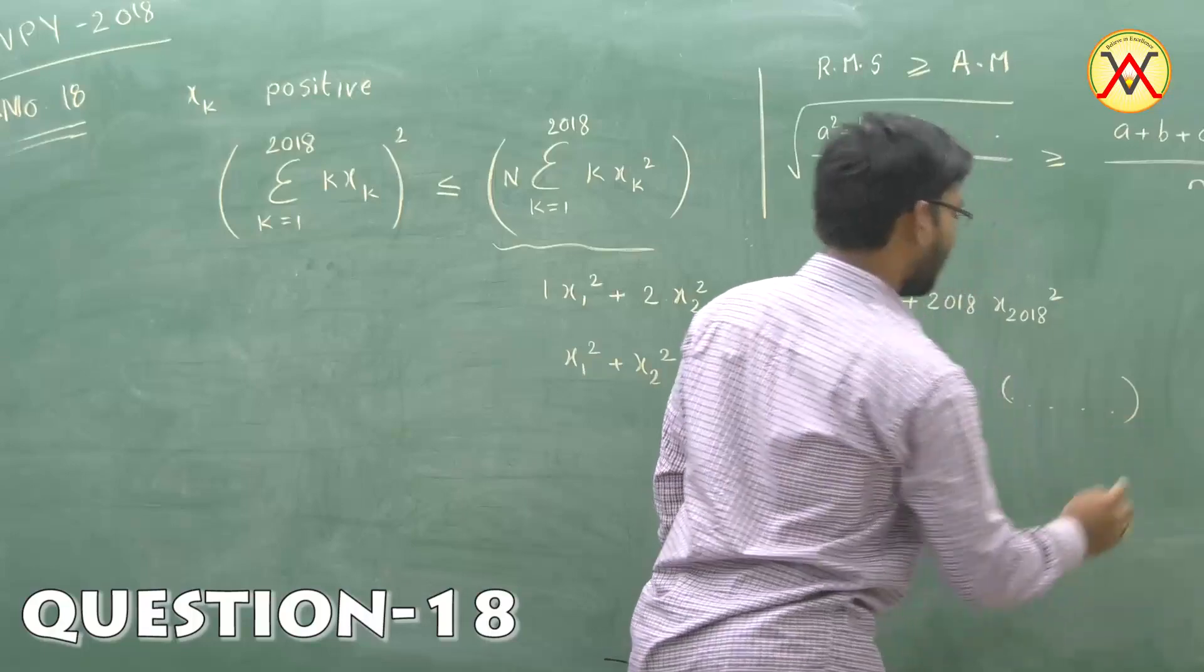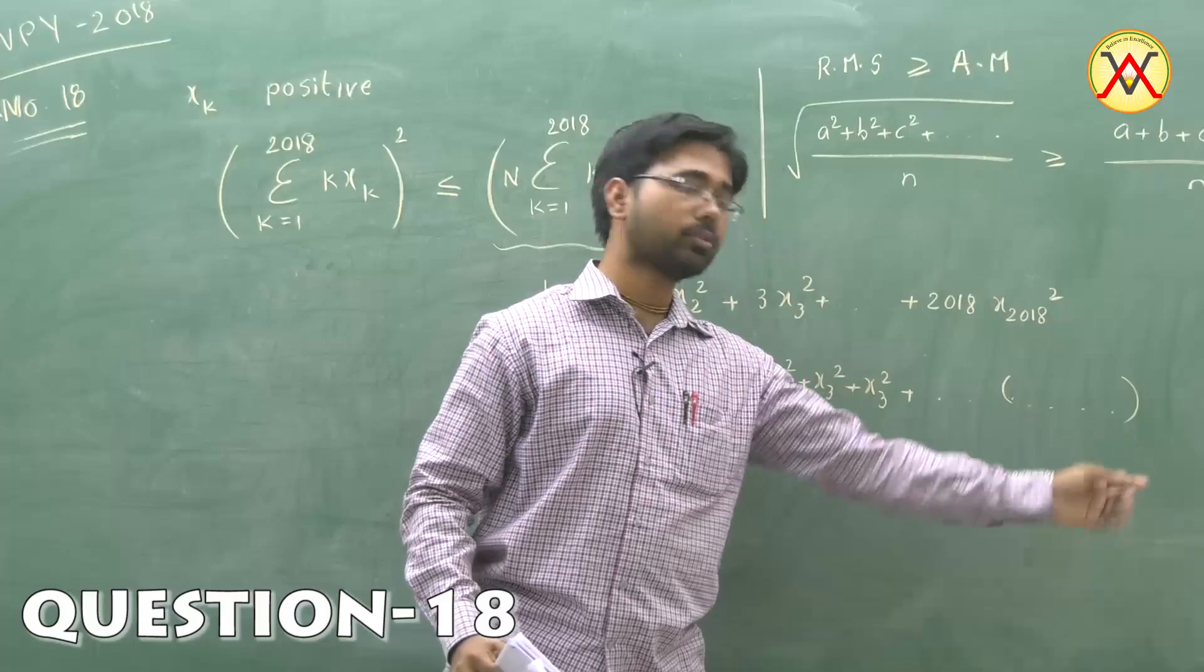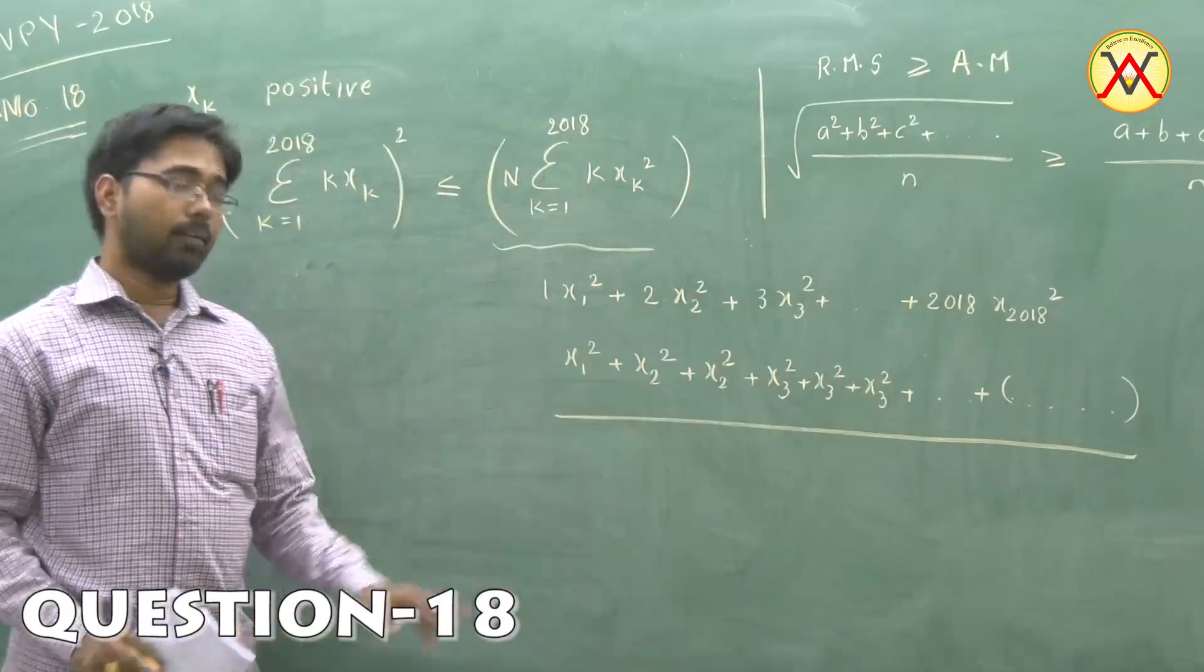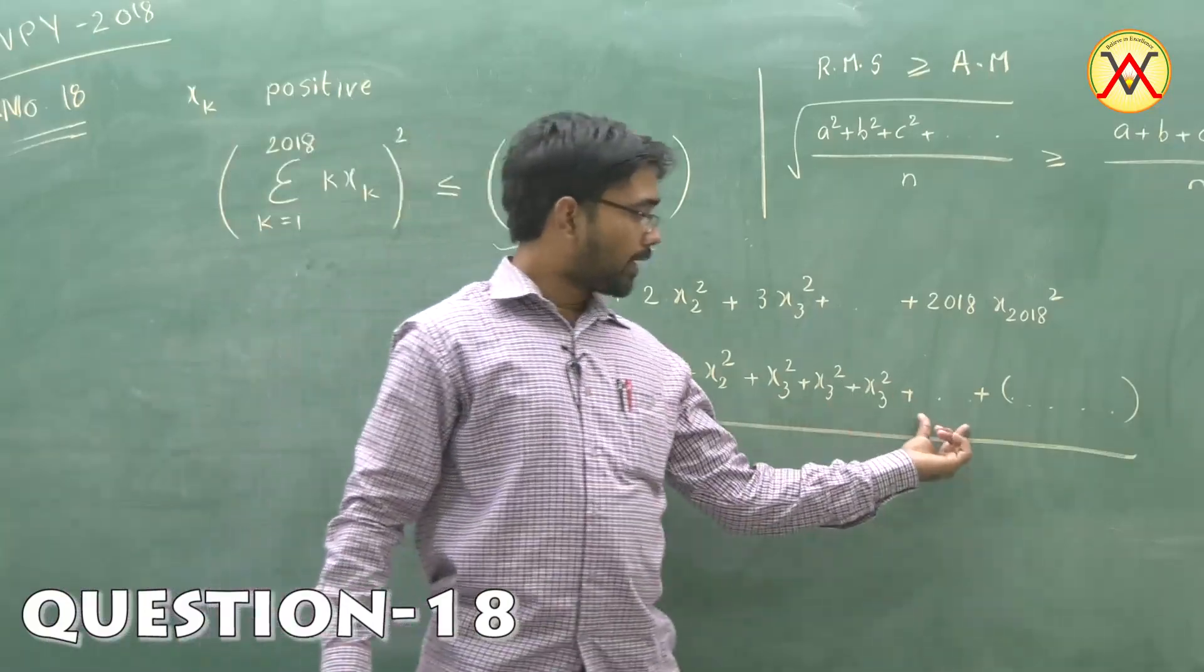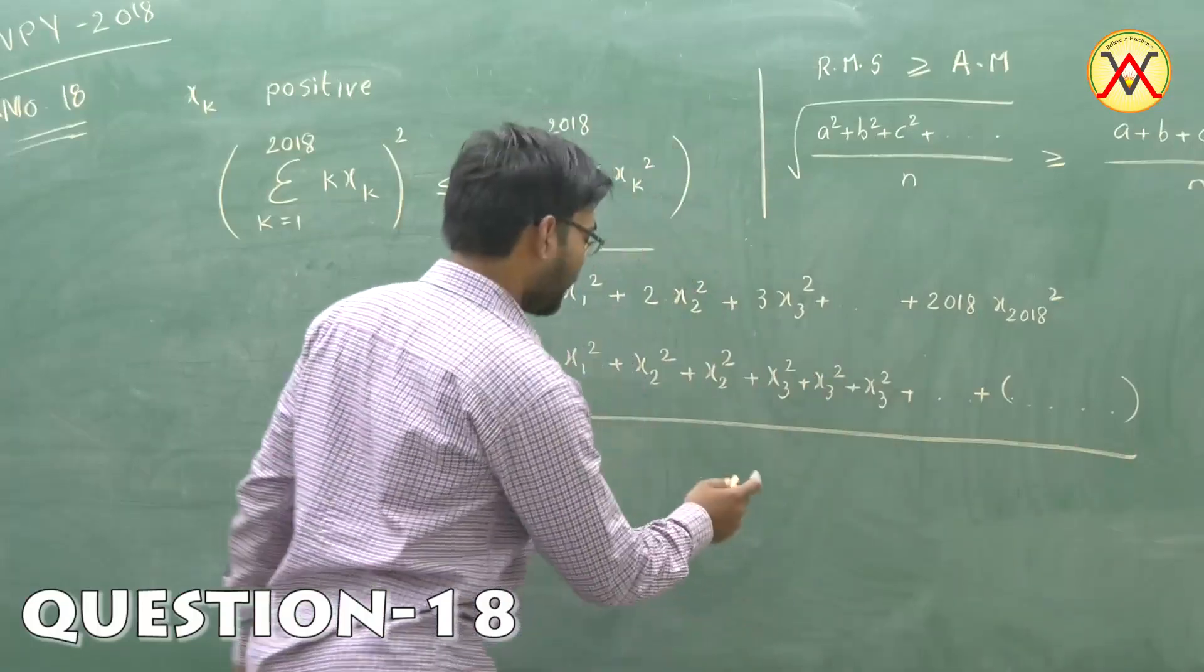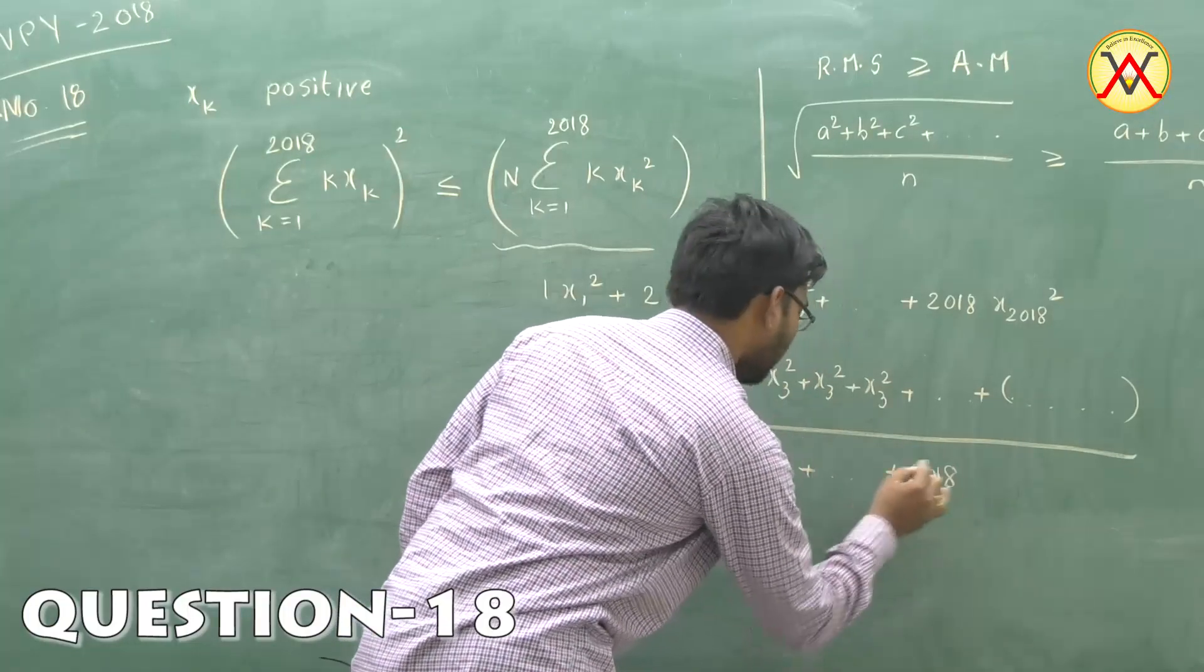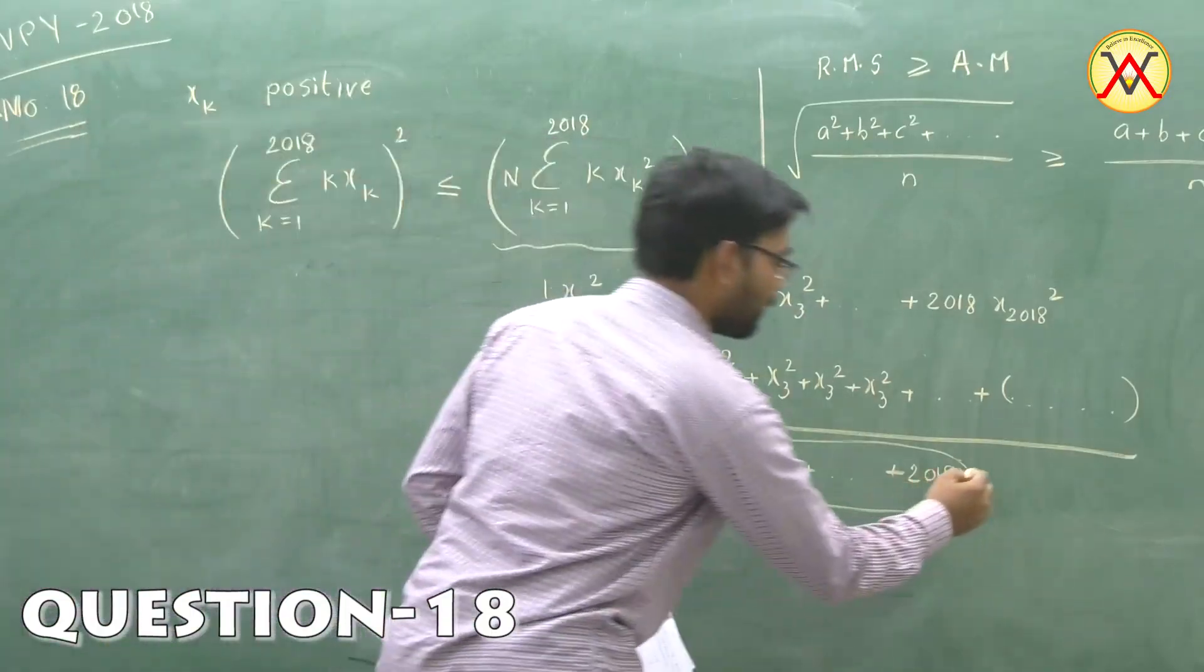The last term will have 2018 parts. The number of terms here will be 1 + 2 + 3 + 4 + ... + 2018, which is capital N as given in the question.